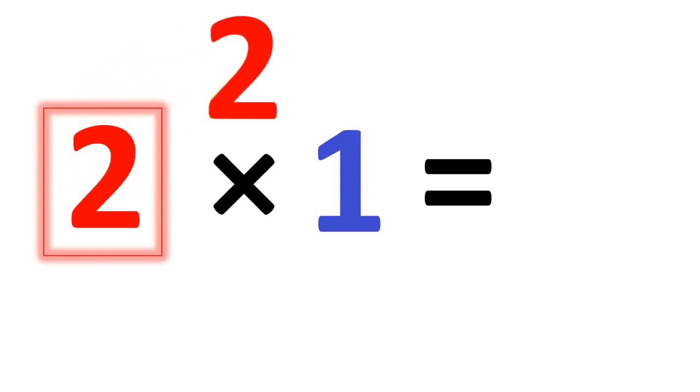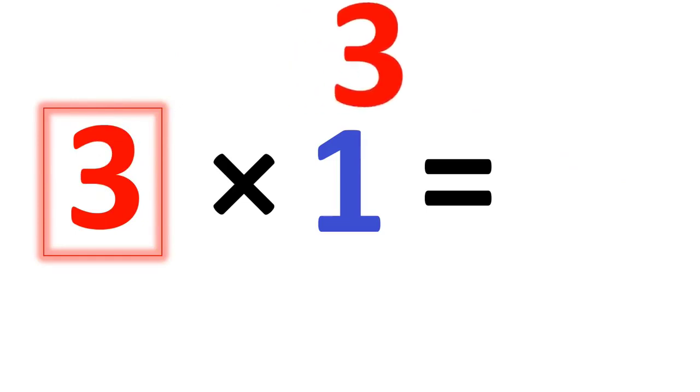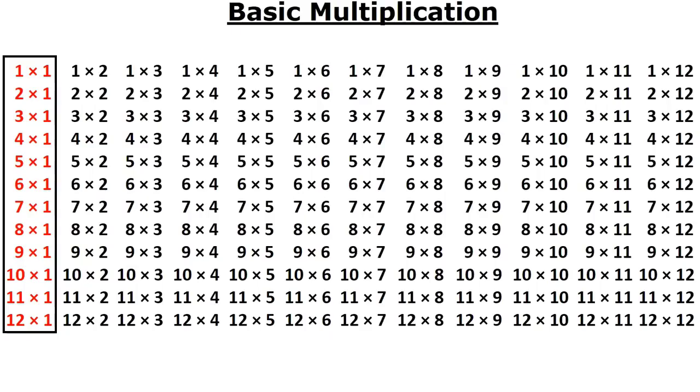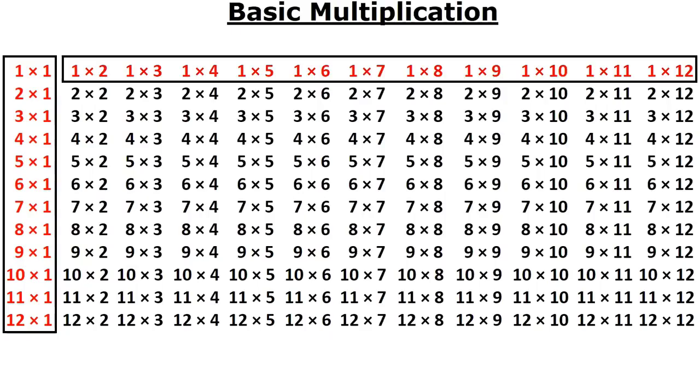So we begin with the easiest multiplication rule to remember, which is multiplying anything times the number 1. Anything times the number 1 is that number. 1 times 1 is 1, 2 times 1 is 2, 3 times 1 is 3, etc. Well, you also know the reverse. You also know 1 times 2, 1 times 3, 1 times 4. So from that one simple rule, you actually know 23 math facts.